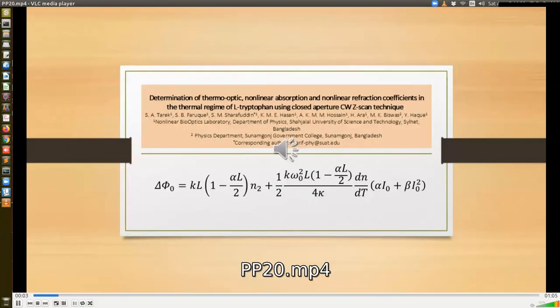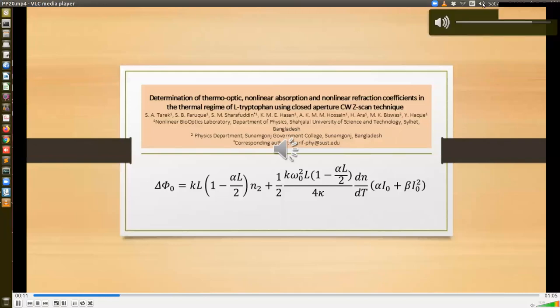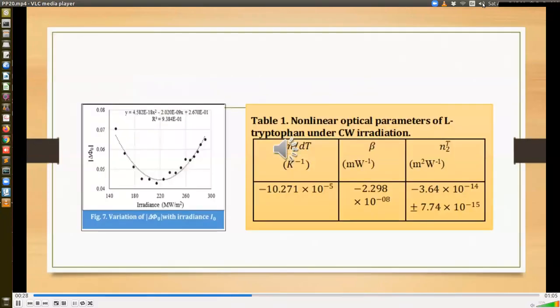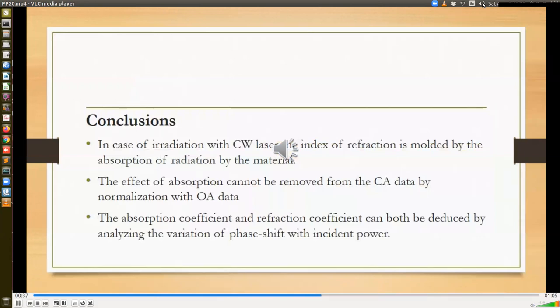In this research work, we have investigated the nonlinear optical response of L-tryptophan aqueous solution with continuous-wave diode laser of red color at the fluence range of 150 to 290 MW per meter square. Here, we have modeled the nonlinear phase shift including linear and nonlinear absorption. The variation of phase shift with power and the experimental results are presented here. We finally conclude that in case of irradiation with continuous-wave laser, the index of refraction is modulated by the absorption of radiation by the material. The effect of absorption cannot be removed from closed-aperture data by normalization with open-aperture data. And the corresponding parameters like the absorption coefficient and the refraction coefficient can both be deduced by analyzing the variation of phase shift with incident power.